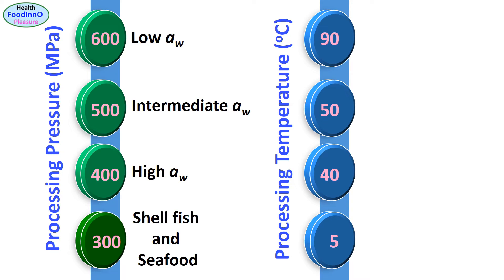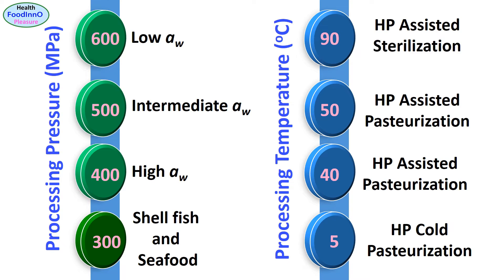In the case of pasteurization and sterilization, different levels of temperature are required. For example, HP cold pasteurization could be used at 5 degrees C, HP assisted pasteurization could be used at 40 to 50 degrees C, and HP assisted sterilization needs 90 degrees C.